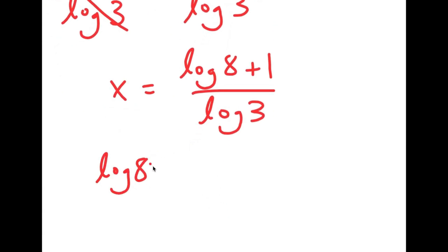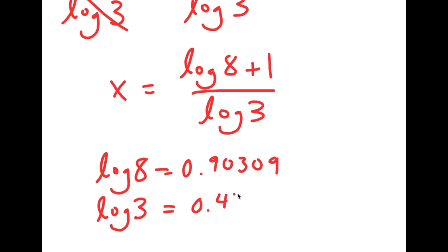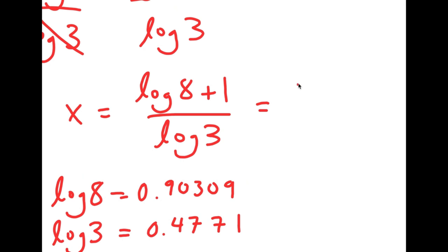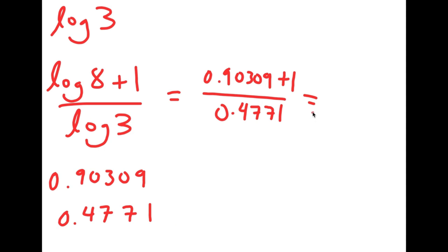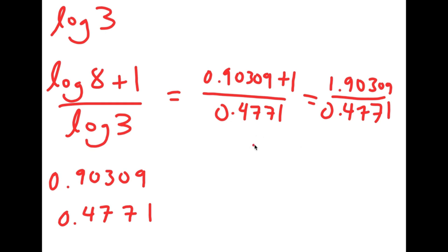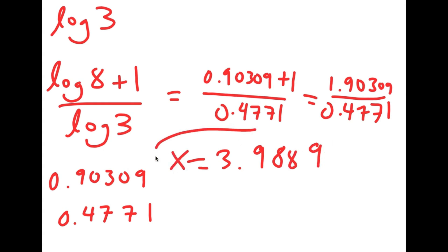Now, log 8 is equal to 0.90309 and log 3 is equal to 0.4771. So this is going to equal 0.90309 plus 1 over 0.4771, which equals 1.90309 over 0.4771. Now 1.90309 over 0.4771 is equal to 3.9889, so x is equal to 3.9889.